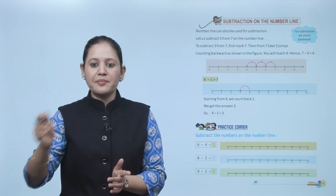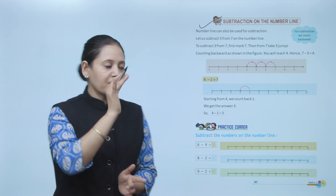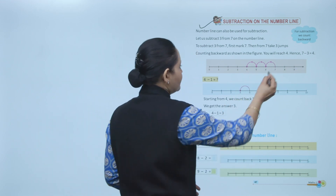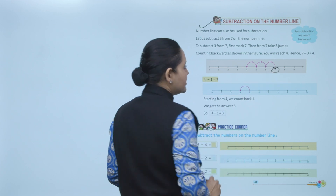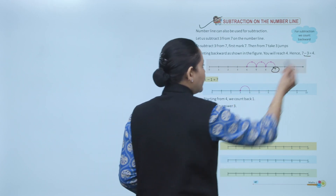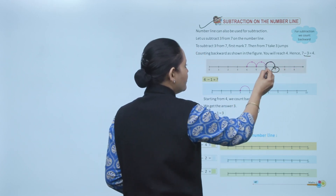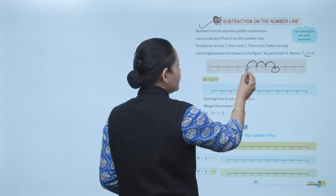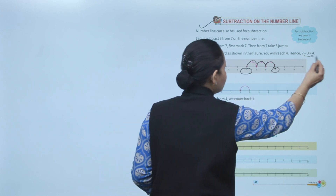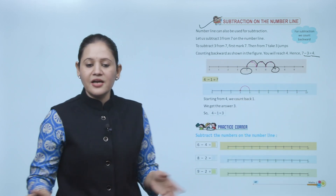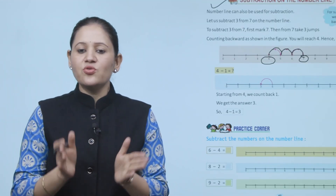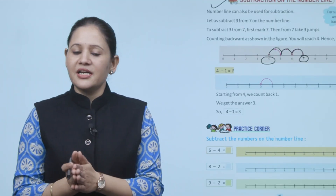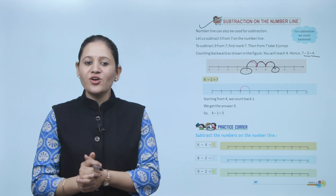For addition we count forward, but for subtraction we count backward. So here, 7 minus 3 — we start at number 7 and move 3 places backward, and we reach number 4. So the answer is 4. Clear. This is the way to do subtraction on the number line.